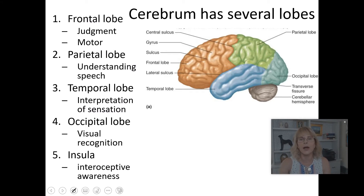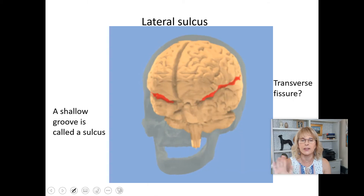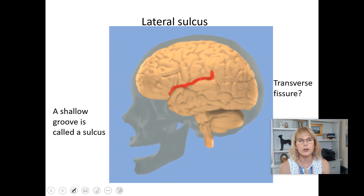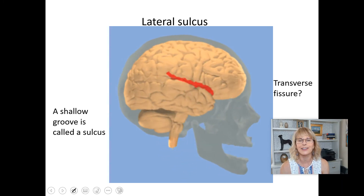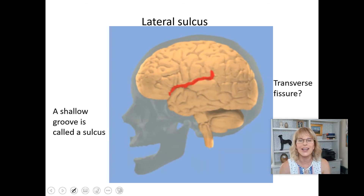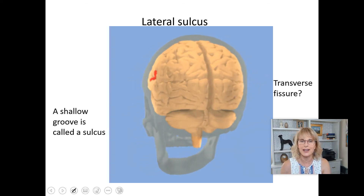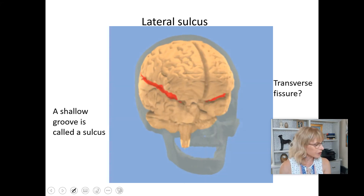Here we've got it colorized: frontal lobe, parietal lobe, occipital lobe, temporal lobe, cerebellum. We don't even talk about the insula. Let's talk about the sulci — all of those grooves, each one of them has a name. That's crazy. Each gyrus has a name — also a little bit crazy. But you don't have to know them all.